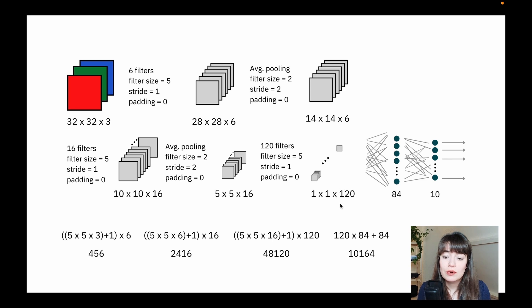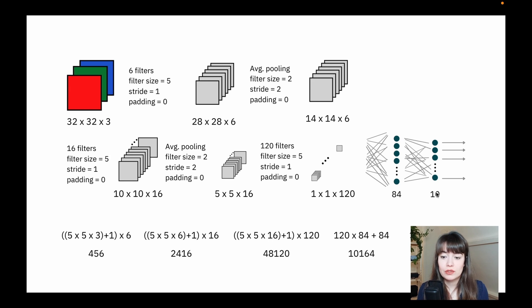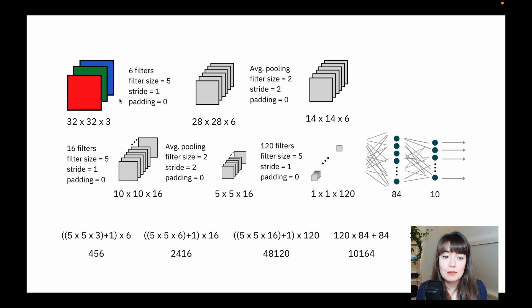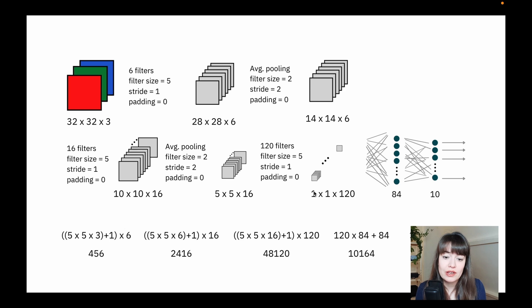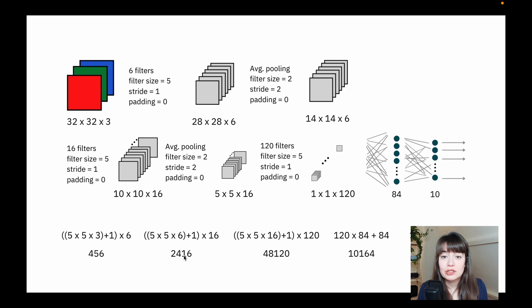For the last fully connected layers, we need 120 input values going into a layer of 84 neurons. So we need 120 times 84 plus 84 biases, making 10,164 parameters. And lastly, we need 84 times 10 plus 10 parameters for the output layer. One thing I want to highlight is that on the first two convolutional layers — the sparsely connected layers — we don't need many parameters even for a big image with three channels. But once we start applying a weight to each pixel in fully connected layers, the numbers of weights grow very large. The way CNNs manage this is through partially connected layers and weight sharing.